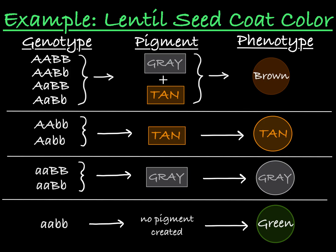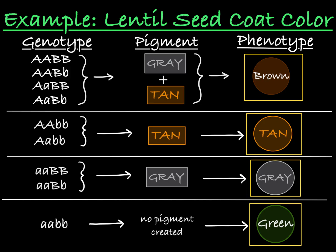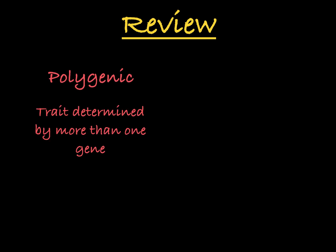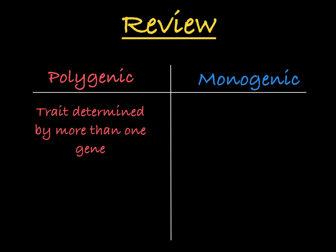The fact that we're dealing with multiple genes increases the number of phenotypes you see for this trait — four distinct lentil seed coat colors. That's a polygenic trait, a trait determined by more than one gene. Polygenic traits differ from monogenic traits because monogenic traits are determined by a single gene, while polygenic traits can be determined by two, three, four, or more genes.